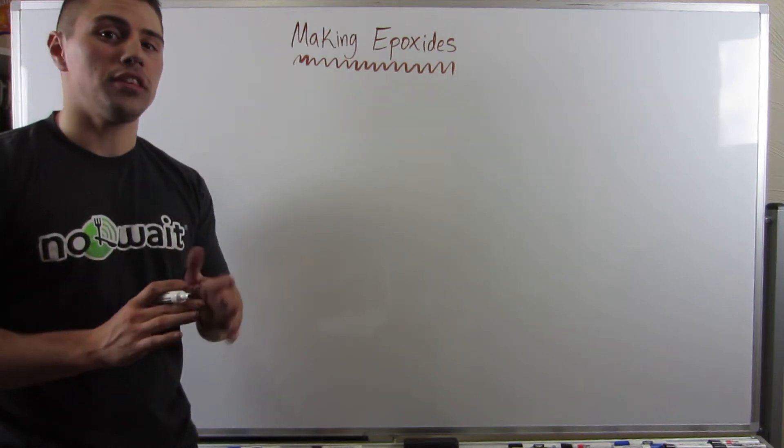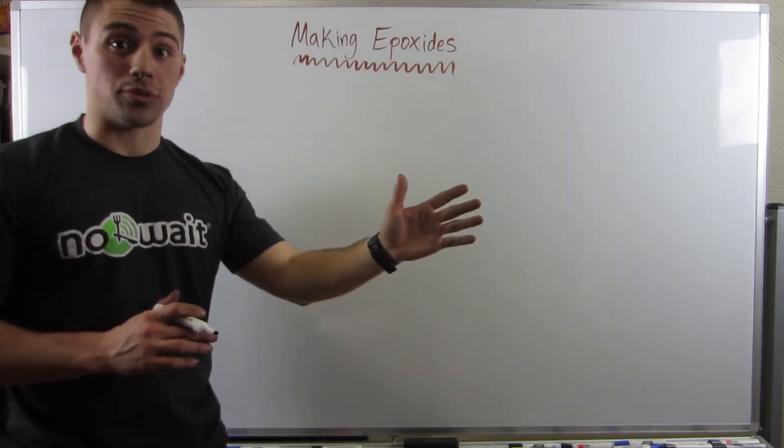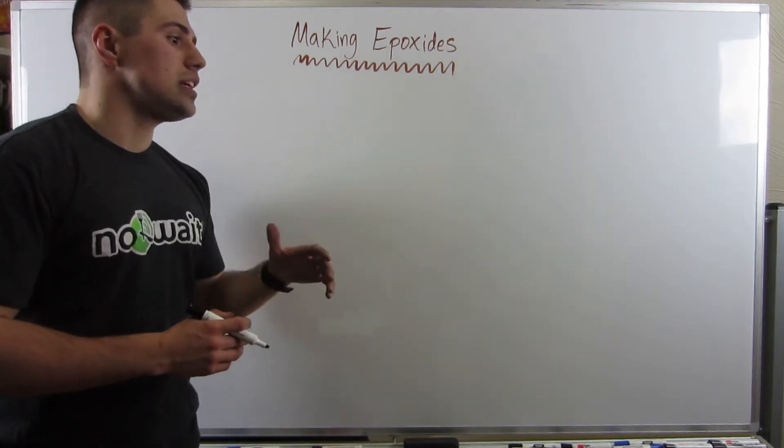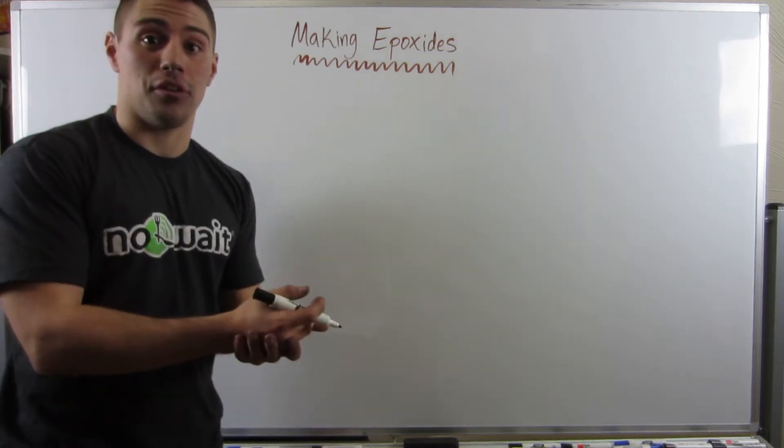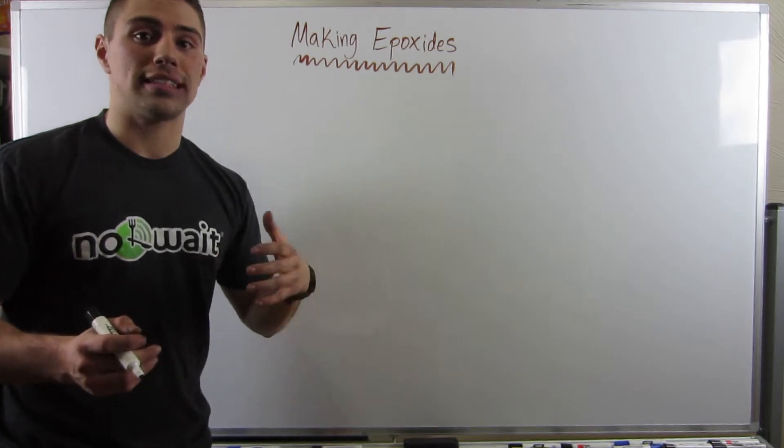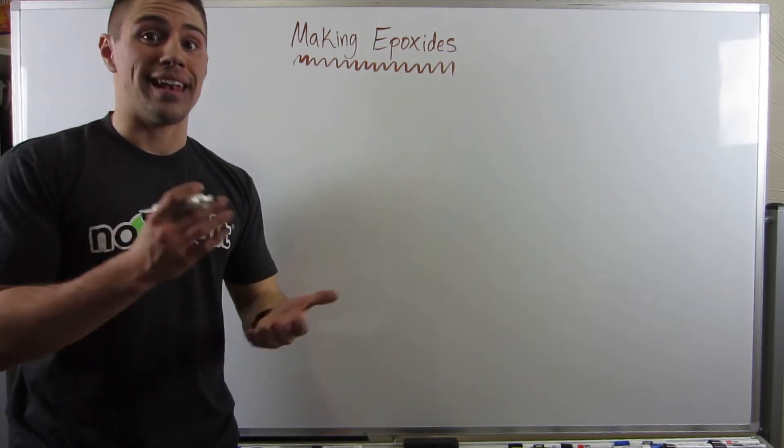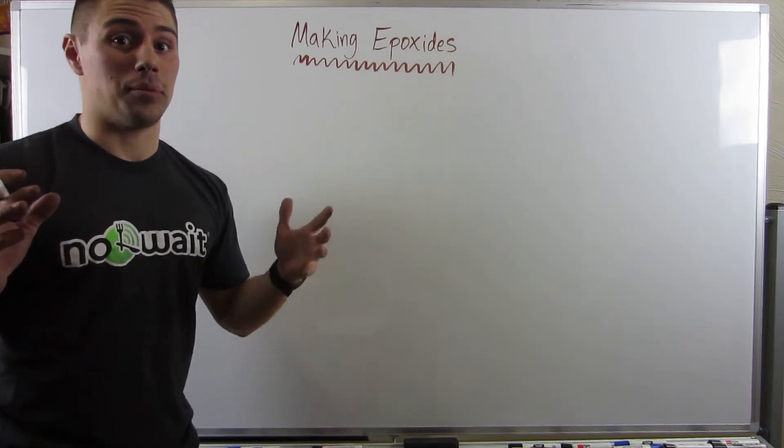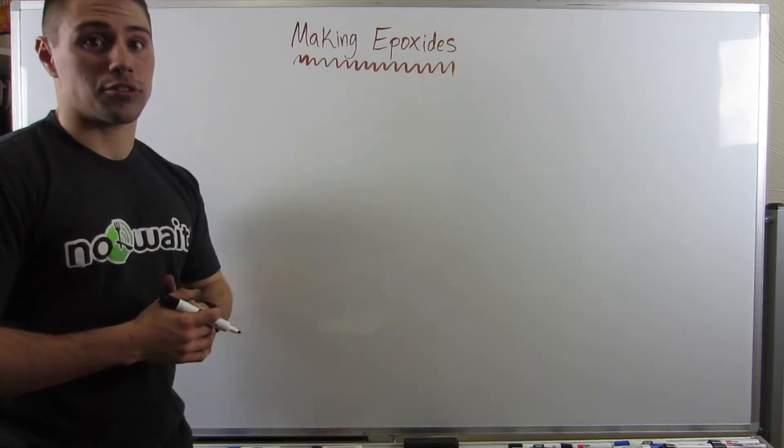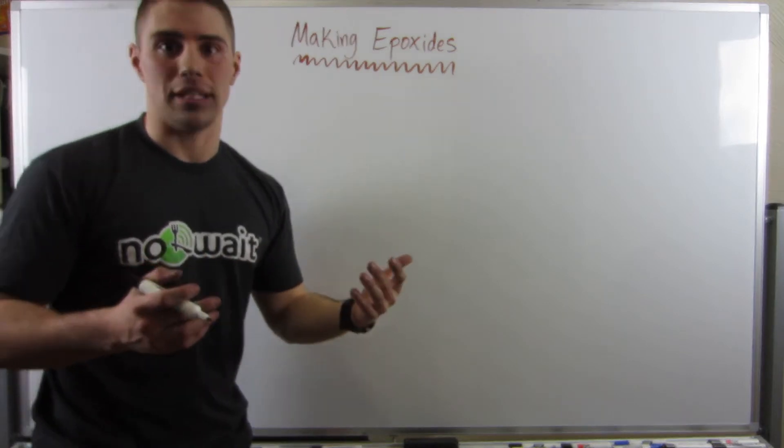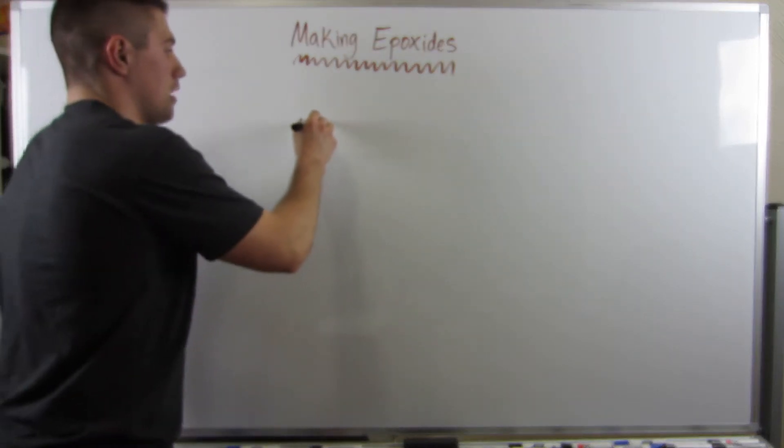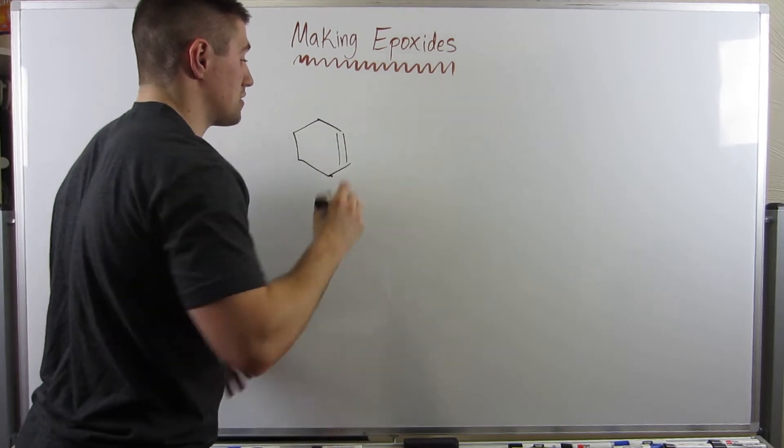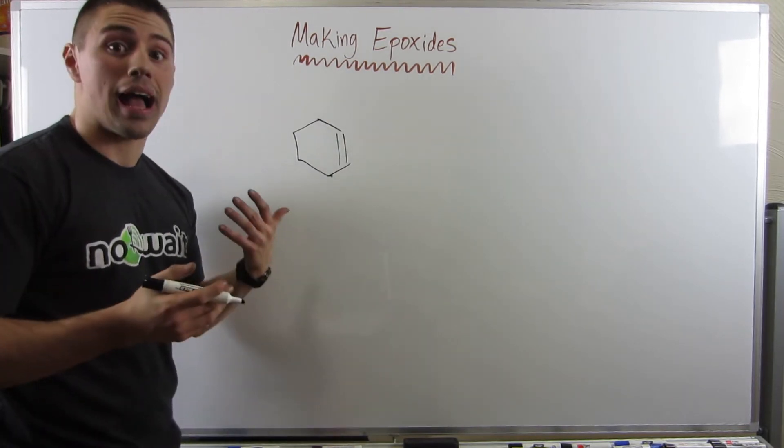Okay gang, so if you can think back to the alcohol derivatives video series, when we talked about epoxides, I showed you guys how to attack them, but I didn't necessarily show you how to make them. And now we can actually talk about how to make them, and it's super easy. This is the alkenes unit, so if you can take a wild guess, we make epoxides from alkenes.